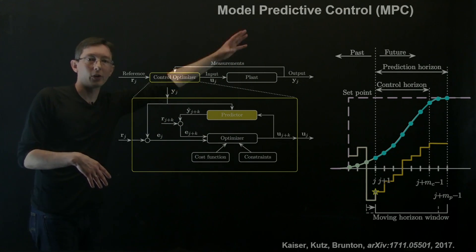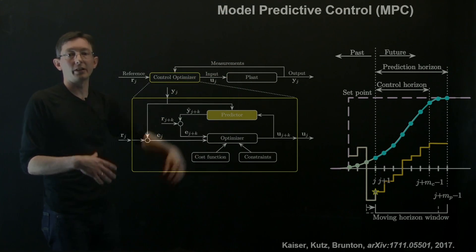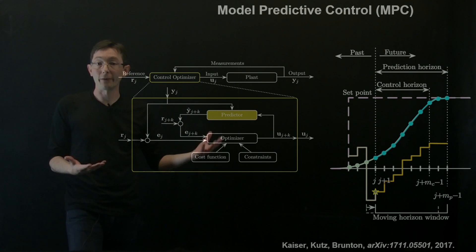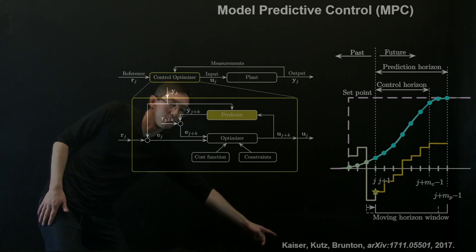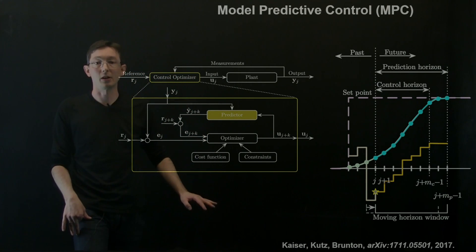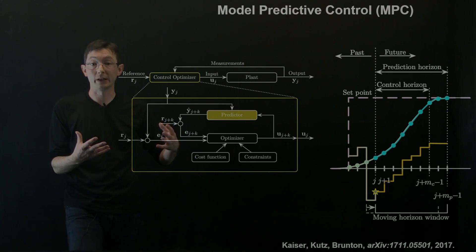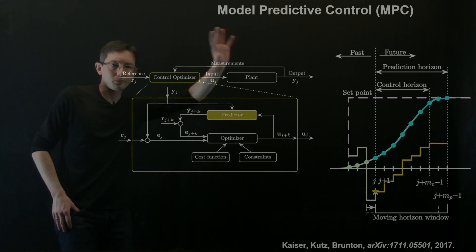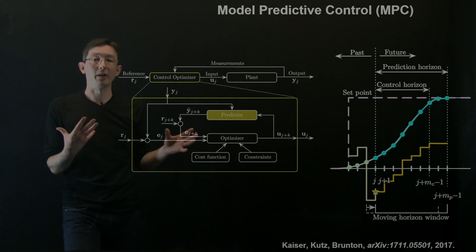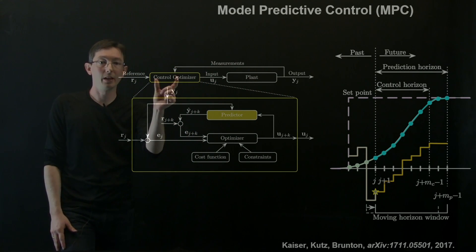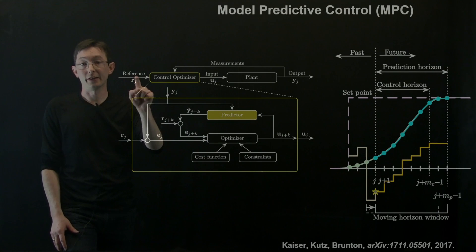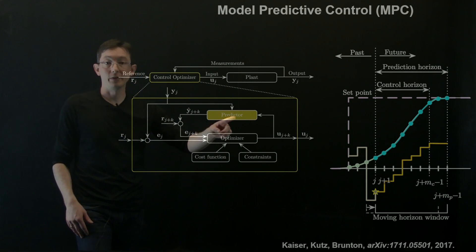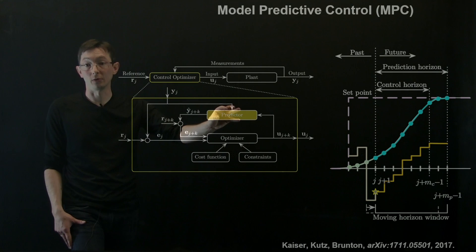This is the overarching model predictive control framework, in the context of a reference tracking problem. You can read more about this in Erika Kaiser's archive paper on model predictive control with sparse non-linear models. Here's the block diagram of what model predictive control is doing. You essentially have some reference value you're trying to track, and a predictor — this is the model of your system — so this is where your SINDYc with control model is going to be.